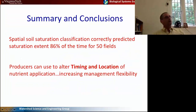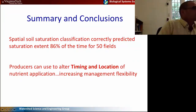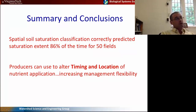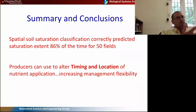Finally, we were able to correctly predict the saturated extent 86% of the time for 50 fields. We feel that producers can use this to really alter the timing and location of nutrient application, which could increase management flexibility. They won't have to decrease their manure applications if they follow tools like these.